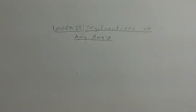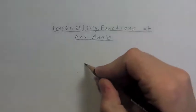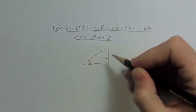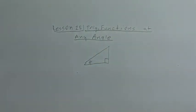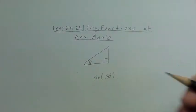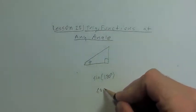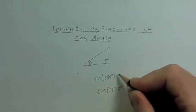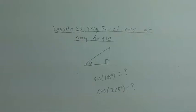Alright, hello class. Today we're going to look at lesson 25, which is on trig functions at any angle. So what we have right now is the right triangle definitions, where we build all of our definitions out of a right triangle. But the problem is we can actually evaluate things like sine of 180 degrees or cosine of 225 degrees. So the question then becomes, how do we do that?